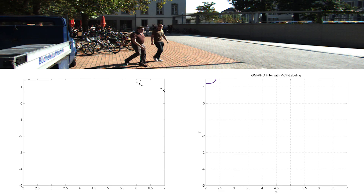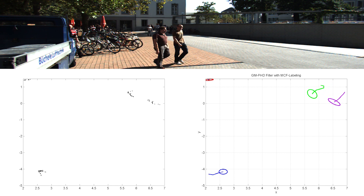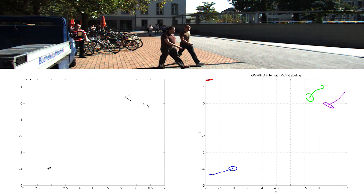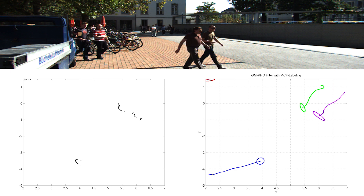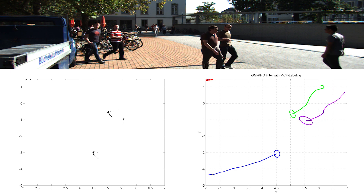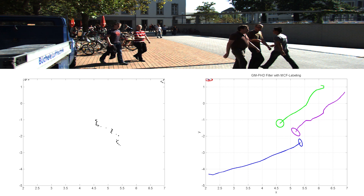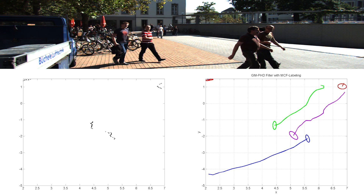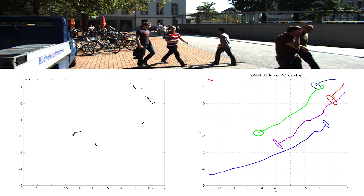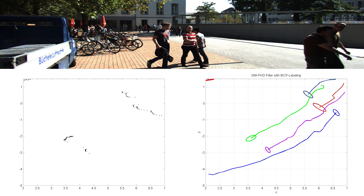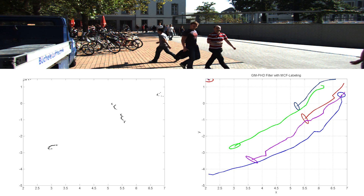As an example, this video illustrates the result when detections from a laser scanner are used to track pedestrians. As you can see, in each measurement scan we typically receive multiple detections of each person in the field of view. In this case, tracking is performed using a type of PHD filter specifically designed for extended object tracking.